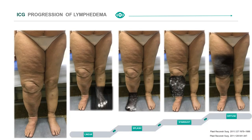ICG lymphography was first reported in 2011 for evaluation of lymphedema. In 2011, the Japanese group described different patterns of dermal backflow. These patterns change according to the physiopathological changes of the lymph flow and lymphatic vessels — becoming more sclerotic with less lymph flow. They classified into two large groups: the linear pattern, which is normal, and the dermal backflow pattern. As lymphedema progresses, the pattern changes from splash to stardust and eventually to diffuse — the latest stage of lymphedema.